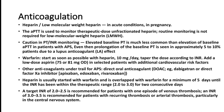A target INR of 2 to 2.5 is recommended for patients with one episode of venous thrombosis. An INR of 3 to 3.5 is recommended for patients with recurring thromboembolic phenomena. So: one episode, target is 2 to 2.5; recurrent episodes, target is 3 to 3.5.